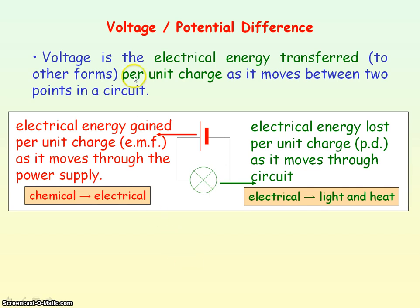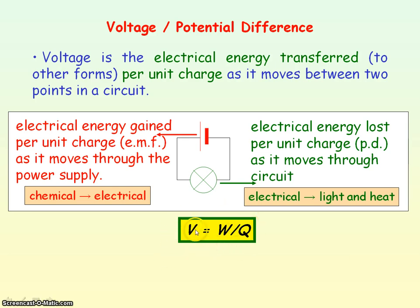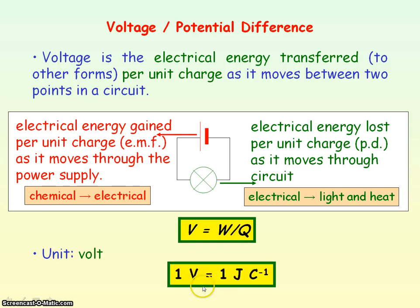The equation for voltage comes from its definition: voltage is equal to the electrical energy transferred per unit charge. From this definition we can get the unit of voltage, which is the volt. One volt is equal to one joule divided by one coulomb — so one volt equals one joule per coulomb. One volt is the voltage or potential difference when one joule of electrical energy is transferred per coulomb of charge.